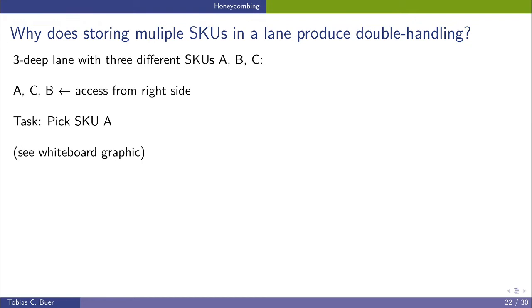Third operation, we can pick pallet A, the pallet that we actually want. But then we need to put back pallets C and B which requires in total two more operations. So instead of having one operation to pick pallet A, we have to deal with five pallet moves.